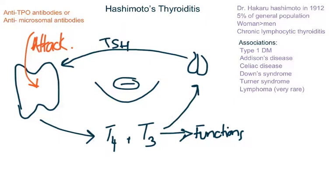People with Down syndrome and Turner syndrome are also prone to get Hashimoto's thyroiditis, and very rarely lymphoma of the thyroid gland is also associated with Hashimoto's.